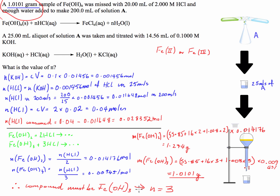Let's summarise what we did. A back titration involves mixing a solution that's in excess with the solution we're trying to analyse. We then titrate against the remaining excess solution — not the solution we're trying to analyse. Once we know what is remaining in the excess solution and what we put in, we can calculate the amount that was consumed. Knowing how that solution reacts with the compound being analysed, we can figure out the moles of compound in the original sample.